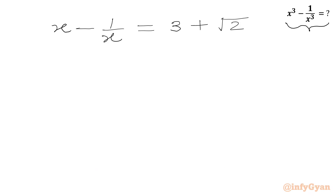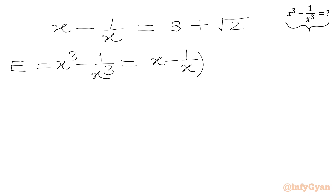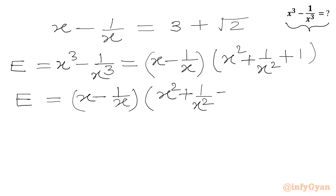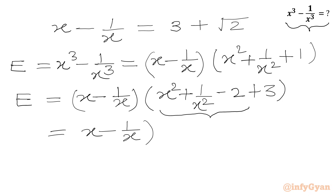Now our target expression is E equal to x cube minus 1 over x cube. Using the factorization formula, we can write this as x minus 1 over x, times x square plus 1 over x square plus 1. We rewrite x square plus 1 over x square plus 1 as x square plus 1 over x square minus 2 plus 3, since 3 minus 2 is plus 1. From those three terms we recognize x square plus 1 over x square minus 2 is x minus 1 over x whole square, so we have x minus 1 over x, times x minus 1 over x whole square plus 3.